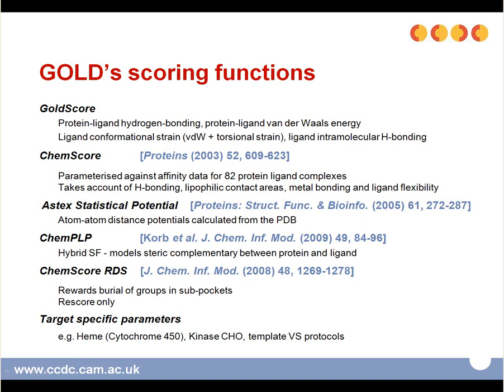The first two scoring functions — GoldScore and ChemScore — are traditional scoring functions based on force fields or on regression, where the parameters are derived from a set of experimental binding affinities and structures. The third scoring function in GOLD is the ASP statistical potential. This scoring function uses a different approach: information about the frequency of interaction between the ligand and the protein atoms is gathered by analyzing existing ligand-protein structures in the Protein Data Bank, and this information is used to generate statistical potentials.